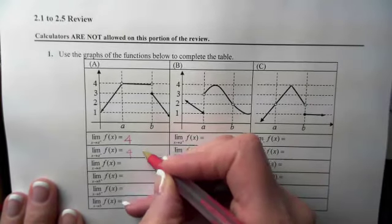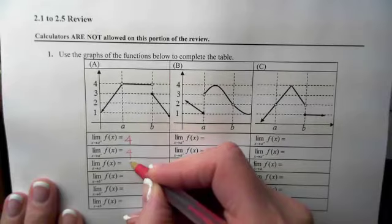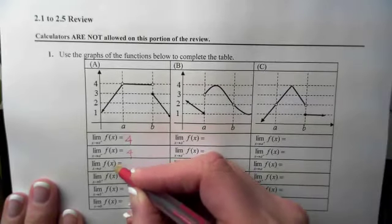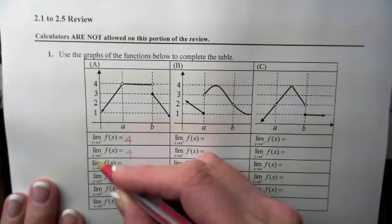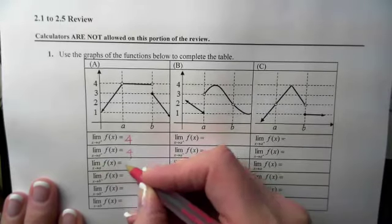Now, since these two numbers are exactly the same, the two-sided limit, or this one, which says, what does F approach as X is approaching A from both sides, that is going to be 4.